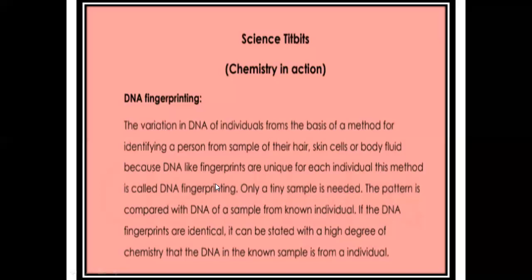DNA fingerprinting is used to identify a person, because fingerprints never remain the same for different individuals. For this, only a tiny sample is needed. The pattern is compared with the DNA of a sample from another individual. If the DNA fingerprints are identical, it can be stated with a high degree of certainty that these fingerprints are from the same individual — just like at airports where our fingerprints are fed into a computer and used to identify us.